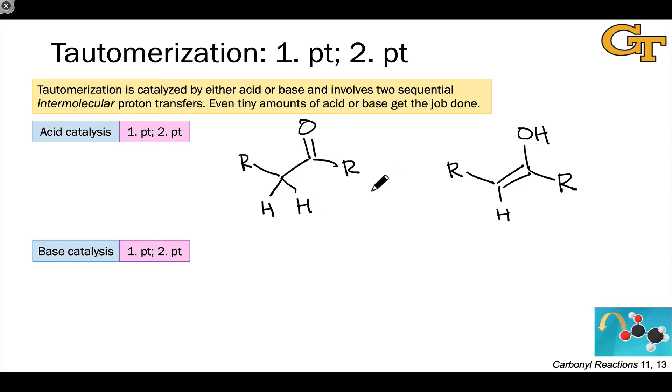Instead of that direct unimolecular process, we generally have to involve either an acid or a base catalyst in tautomerization. And this has been shown empirically. Under conditions when we rigorously exclude acid or base, tautomerization slows down dramatically. So an acid or base catalyst is generally required.